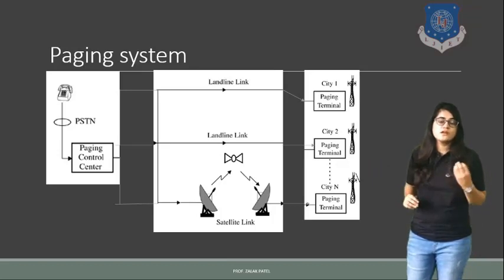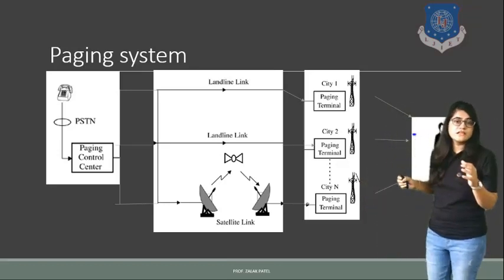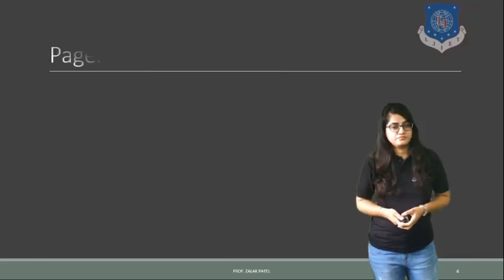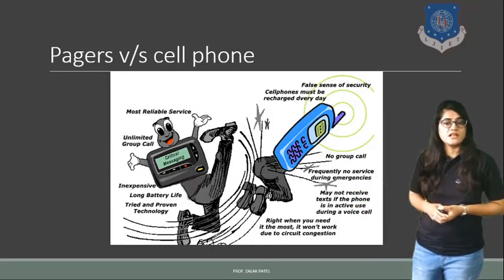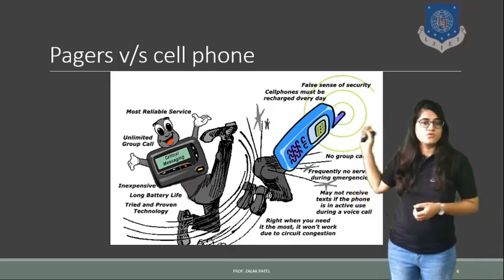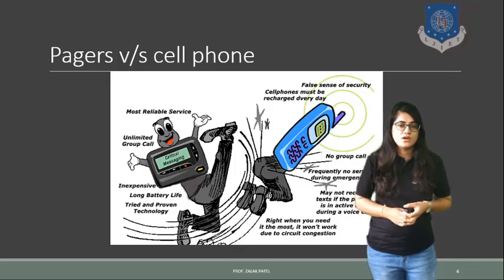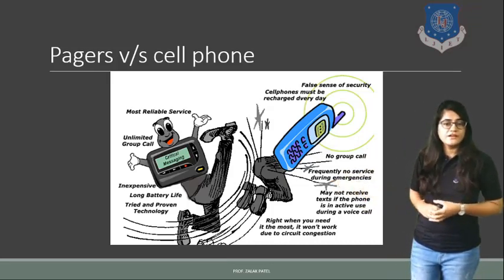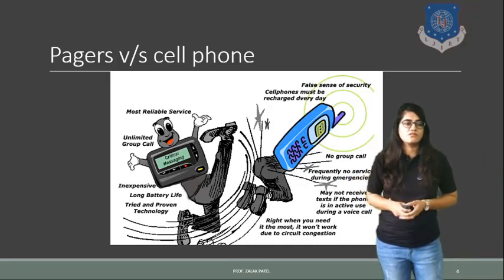The base station is the official station of the network. From the paging terminal, messages are delivered to the user — that is how the paging system works. Comparing pager versus cell phone: the pager offers most reliable service, unlimited group calls, and long battery life. The limitations of cell phones include no group call capability, frequency issues, and no service during emergencies. Pagers are preferred when you need reliable communication during network congestion.